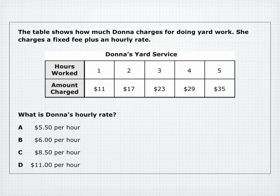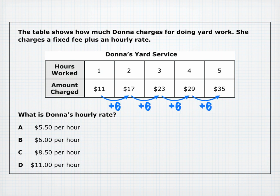The table shows how much Donna charges for yard work — a fixed fee plus an hourly rate. Looking at the table, for each additional hour she works, the charge increases by $6. This means her hourly rate is $6 per hour.